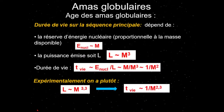Pour estimer la durée de vie d'une étoile sur la séquence principale : la réserve d'énergie est proportionnelle à la masse, et la puissance émise varie comme le cube de la masse. La durée de vie est donc proportionnelle à 1/M², expérimentalement plutôt 1/M^2,3. Une étoile deux fois plus lourde vivra quatre fois moins longtemps. Seules les étoiles légères vivent très longtemps sur la séquence principale — les naines rouges de 0,4 masse solaire ont une durée de vie théorique de plus de 20 milliards d'années, soit plus que l'âge de l'univers.